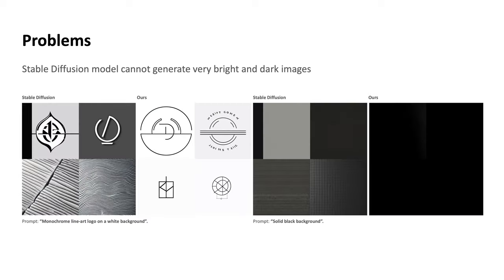We show that this is indeed a model-level problem because when we gave the model a very direct and simple prompt, such as a white background or a solid black background, the model cannot generate that simple prompt correctly. Yet with our fix, the model can correctly generate a white background or a plain black background.